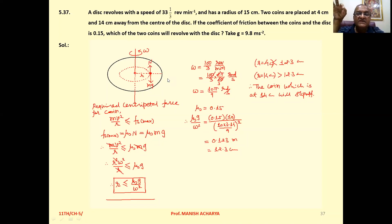So your required centripetal force, if it is less than or equal to maximum static friction, till that, that coin will revolve. But if your required centripetal force to sustain the motion is greater than maximum static friction, then definitely that coin will slip off. So here required centripetal force for the coin, mv²/r, that should be less than or equal to fs maximum.